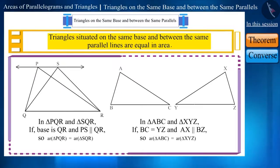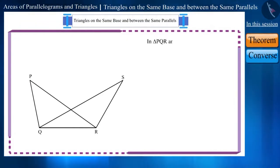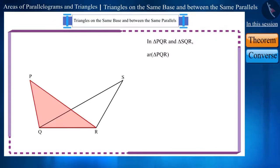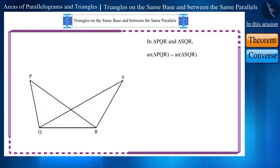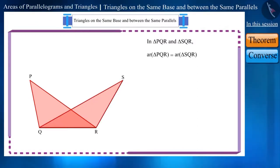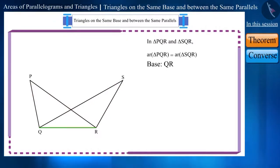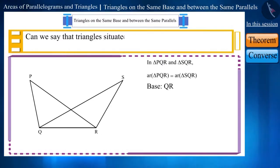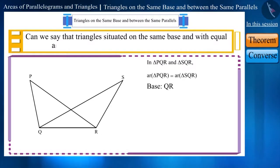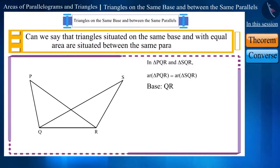Is the inverse of this theorem also true? Here, we are given a figure. It is given that the area of triangle PQR and triangle SQR is equal. Looking at this figure, what else can you say about triangle PQR and triangle SQR? The base of the two triangles, QR, is also the same. Based on the given information, can we say that triangles situated on the same base and with equal area are between the same parallel lines?